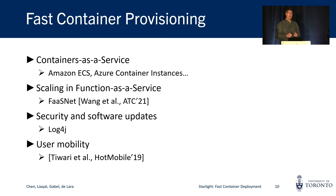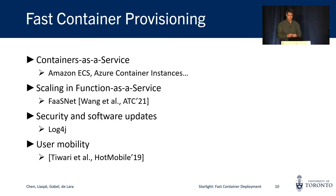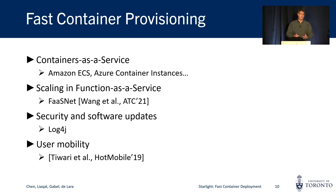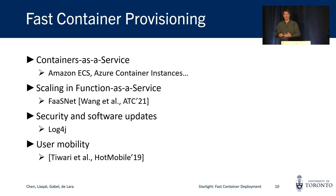As our systems become more and more complex, the speed of container deployment becomes an increasingly important concern. For example, container-as-a-service runtimes like Amazon ECS or Azure Container Instances would like to deploy containers very fast. Similarly, scaling in function-as-a-service systems may require really fast deployment of containers. We also want to reduce the maintenance window for deploying updates, whether security or software updates, as well as support free reconfigurations caused by user mobility on the edge.